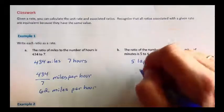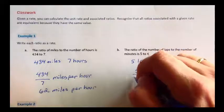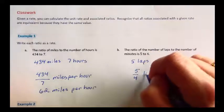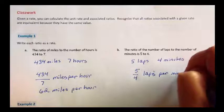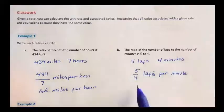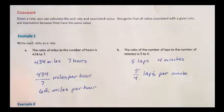We want to write this as a rate. We have 5 fourths laps per minute. Now this is a fraction that can't be reduced to a whole number, but it still is a valid rate. 5 fourths laps per minute.